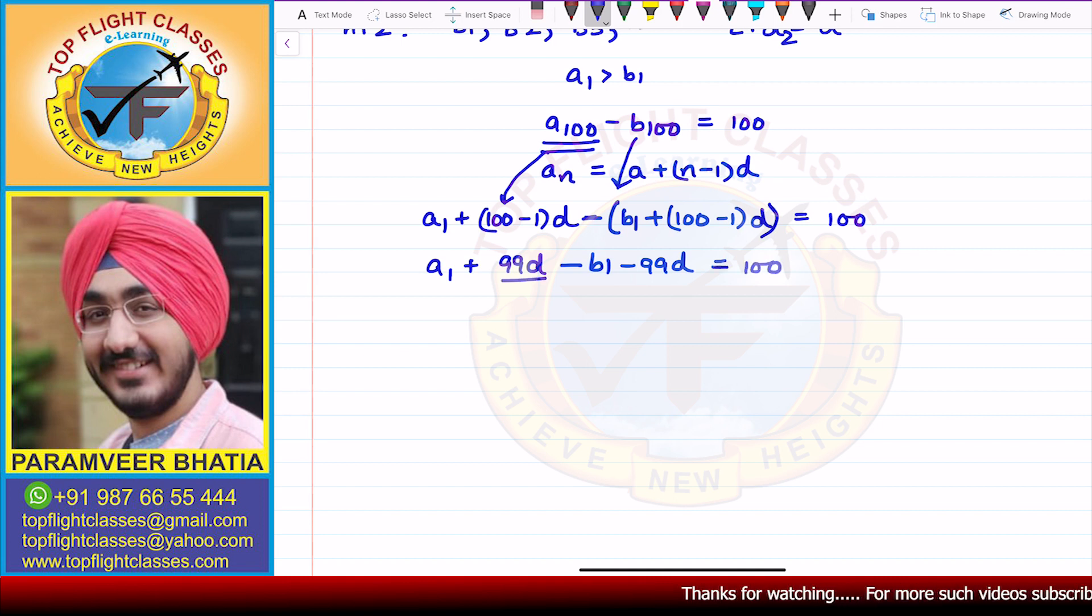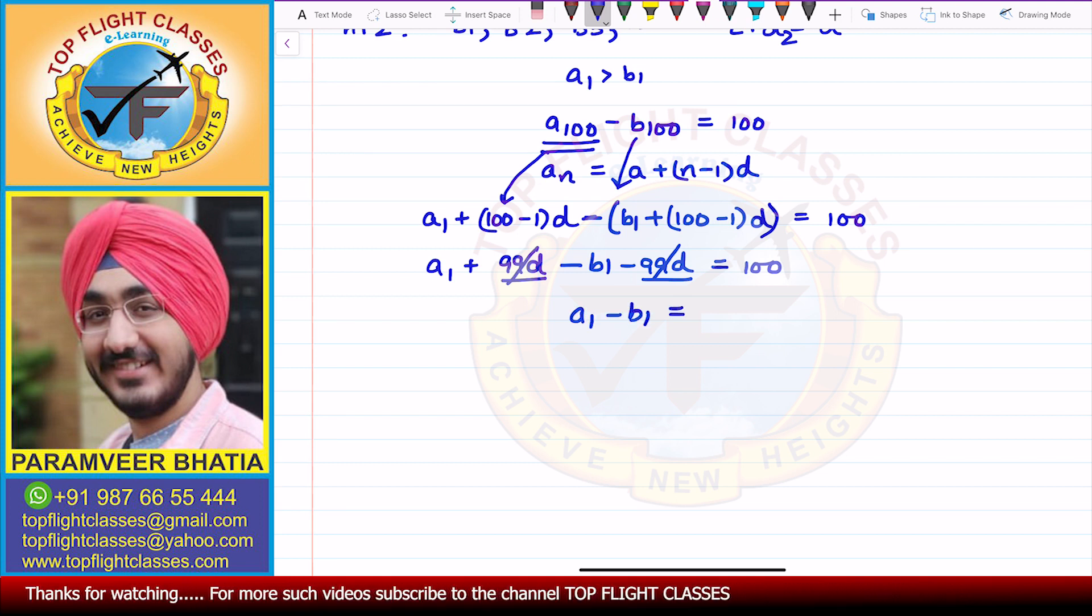So now 99D and 99D, these get cancelled. Because the Ds are equal, the common differences are equal. So this will get cancelled from here. So from here, I get that the difference between the first terms of the two APs is equal to 100. And this is my first equation.